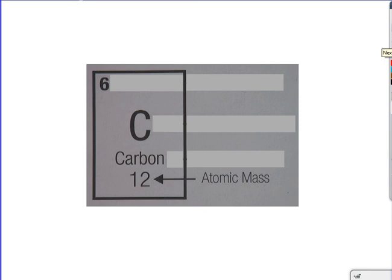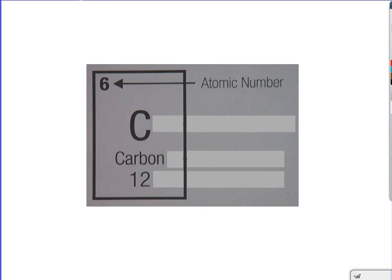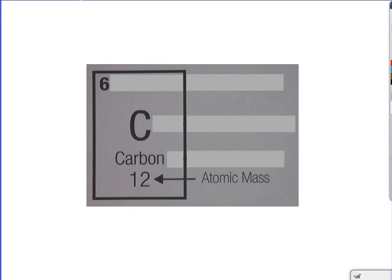Each element has its own atomic mass and its own atomic number. Now the reason we say sometimes the average atomic mass is because some carbon atoms are a little bit different and may have a slightly different mass, either a little bit more or a little bit less. But on average, the majority of the carbon atoms will have an atomic mass of 12.